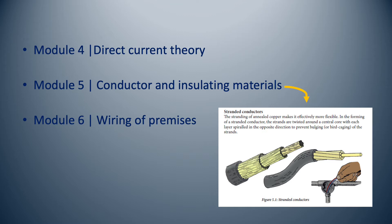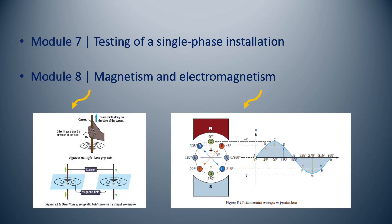The wiring of premises is the focus of Module 6, formerly the 8th module. Module 7 has remained the same, and the focus is on the testing of a single-phase installation.